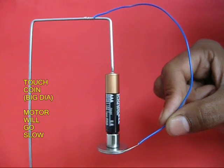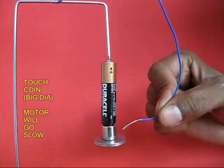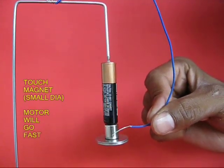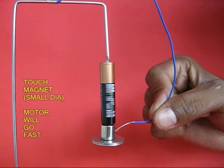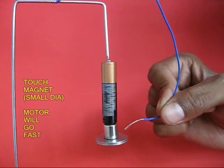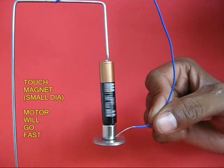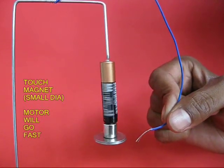If on the other hand you touch the blue wire to the magnet which is a smaller diameter, then the motor spins much faster. It is a kind of gear mechanism.